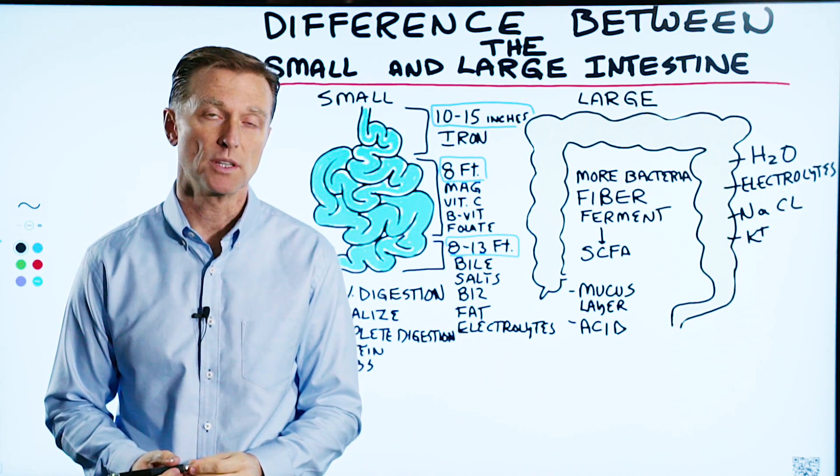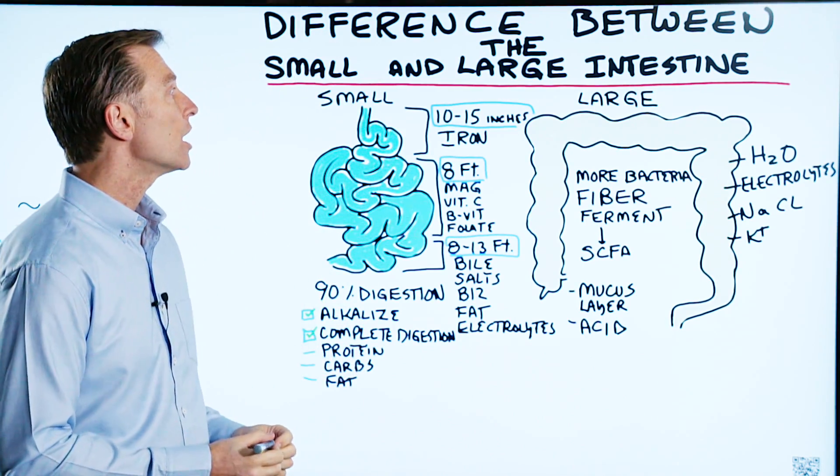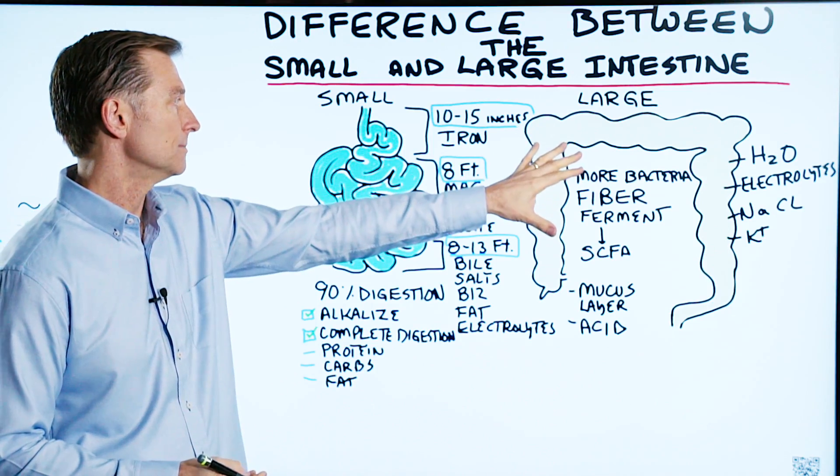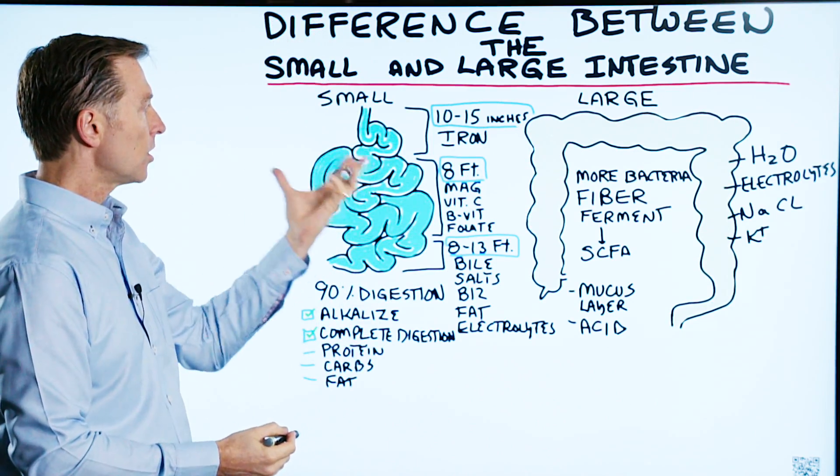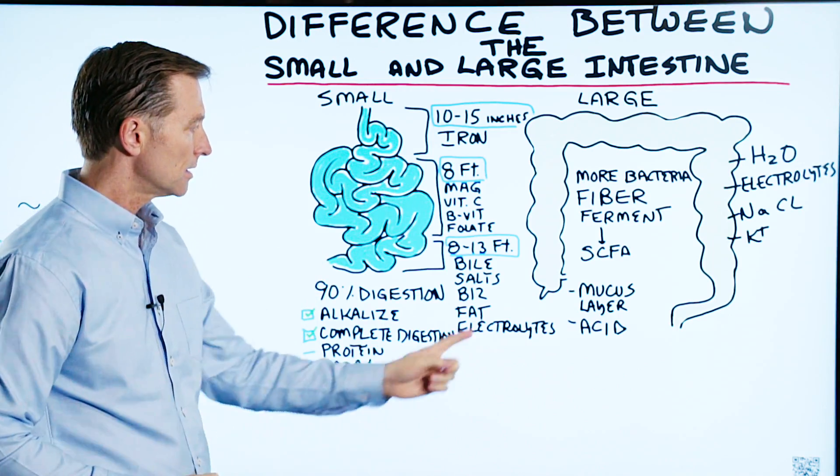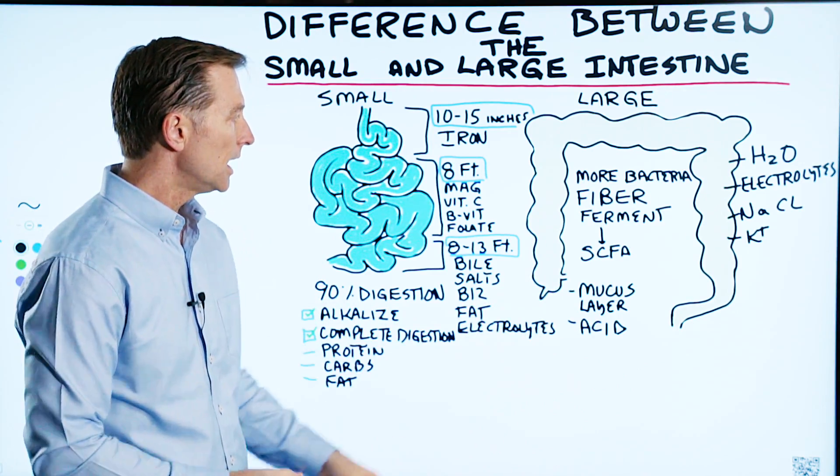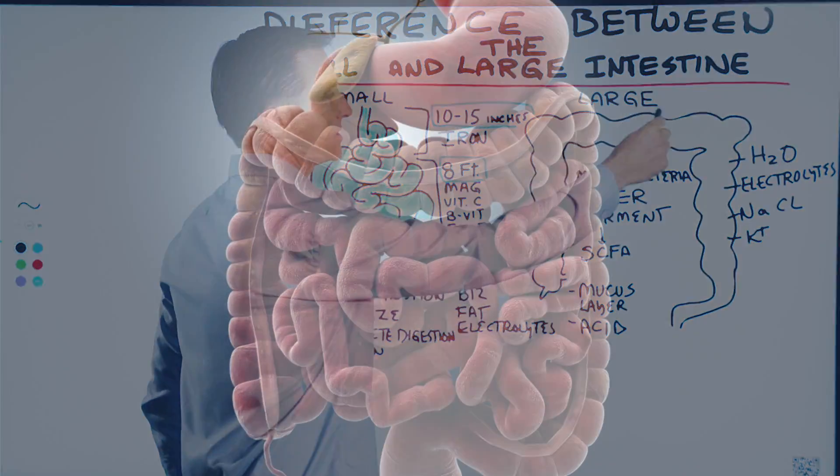Let's talk about the unique difference between the small intestine and the large intestine or the colon. Over here, we have the small intestine. So you have the stomach, small intestine. It connects through a valve, ileocecal valve, and then the food goes through the large intestine.